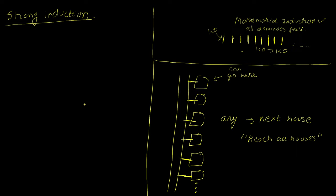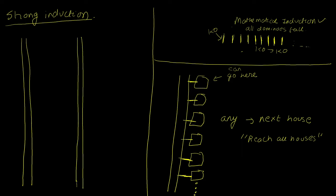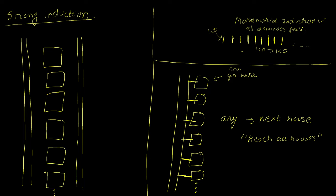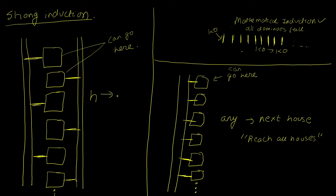Now let's see a modified version of the house example to understand why strong induction is needed. This time we imagine two roads, with the same arrangement of houses, but each house is linked to the alternate side. So from house 1 you can only go to house 3, from 2 you can only reach 4, and so on — each house connects to the house two positions ahead.